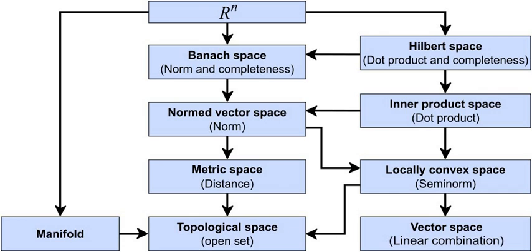A space now consists of selected mathematical objects—for instance, functions on another space, or subspaces of another space, or just elements of a set—treated as points, and selected relationships between these points. Therefore, spaces are just mathematical structures of convenience. One may expect that the structures called 'spaces' are perceived more geometrically than other mathematical objects, but this is not always true. According to the famous inaugural lecture given by Bernhard Riemann in 1854, every mathematical object parametrized by n real numbers may be treated as a point of the n-dimensional space of all such objects. Contemporary mathematicians follow this idea routinely. Functions are important mathematical objects; usually they form infinite-dimensional function spaces, as noted already by Riemann and elaborated in the 20th century by functional analysis.